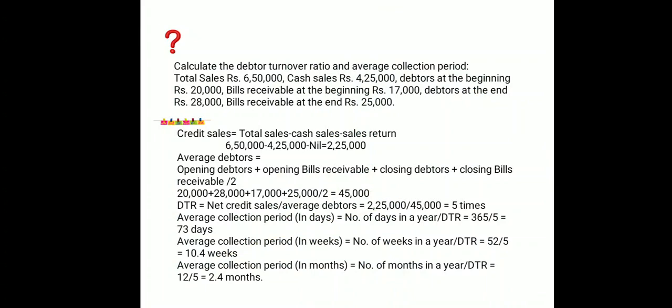Next we calculate the Average Collection Period. Sometimes a question will specify whether to calculate in days, weeks, or months — follow that instruction. If not specified, you can calculate in all three or any one; it is not mandatory to do all three. Also, if the question mentions total working days in a year as 360, use 360 days instead of 365.